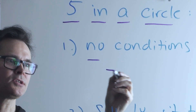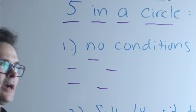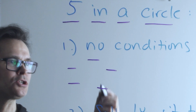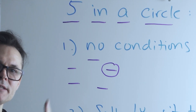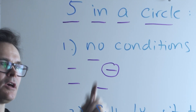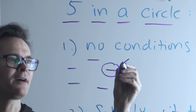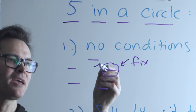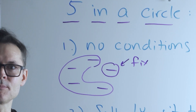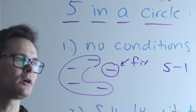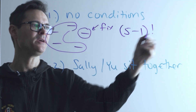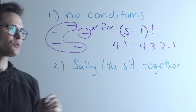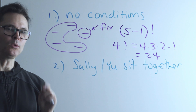Now let's seat those same five people in a circle. The answer is not five factorial, because a line has a specific beginning and end but a circle doesn't. The trick is to fix one person — that establishes a reference point — and then permute the other four around them. So it becomes 4 factorial: 4 × 3 × 2 × 1 = 24.